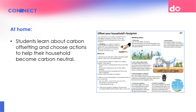Finally, we have the Do stage. The Do activity at home has students working with their families to look at carbon offsetting — one way to reduce your carbon footprint is to offset it by investing in companies that do that for you. Students look at different options and come to a family agreement about which one they would choose and why.